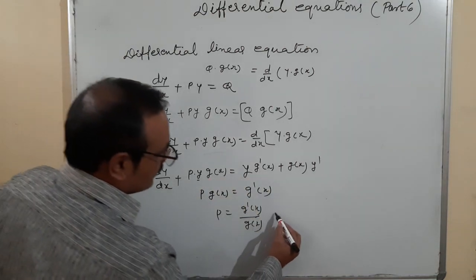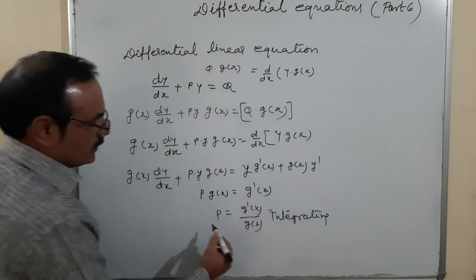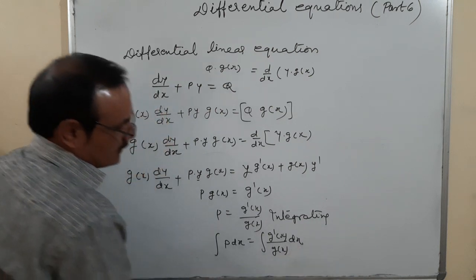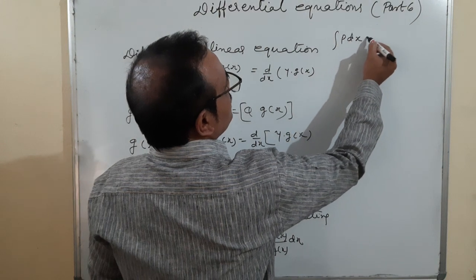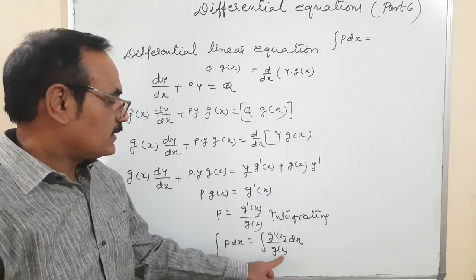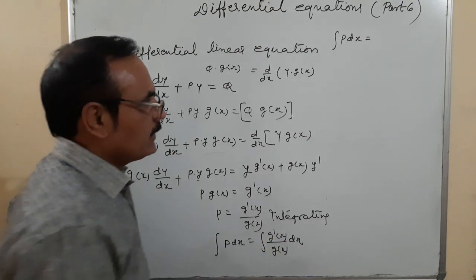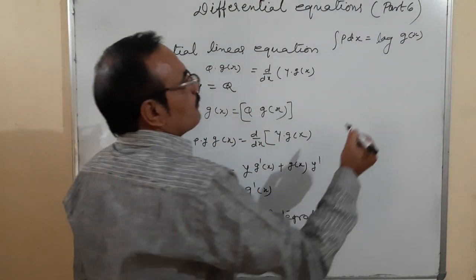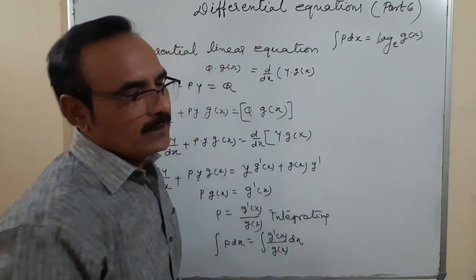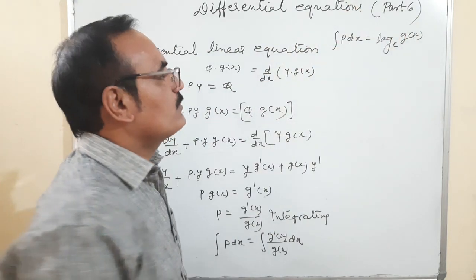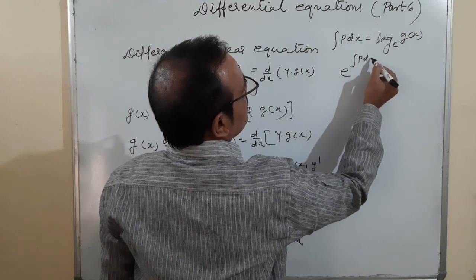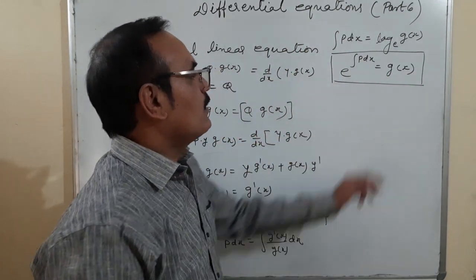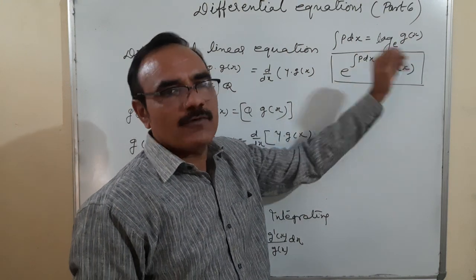Integrating both sides: ∫P dx = ∫g'(x)/g(x) dx. Let g(x) = t, then g'(x)dx = dt, giving ∫(1/t)dt = log t = log g(x). Converting from logarithmic to exponential form: e^(∫P dx) = g(x). This is the value of g(x).